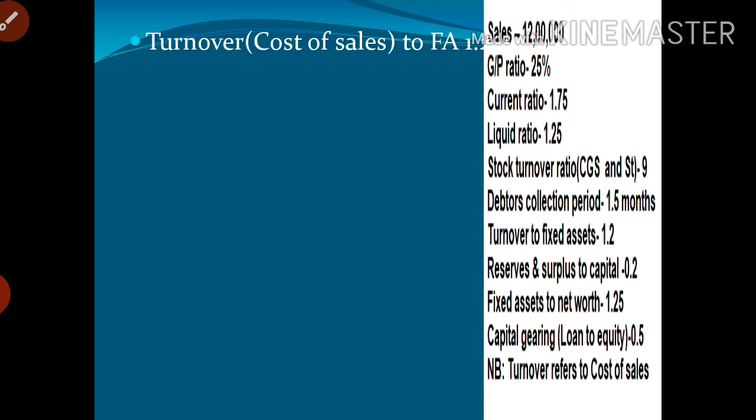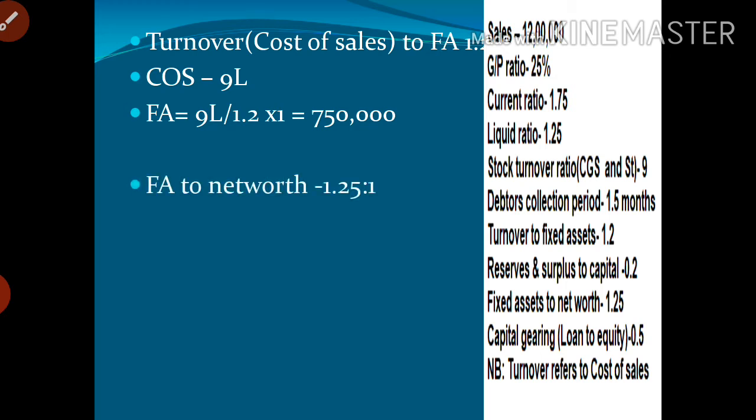Next we move to fixed assets. There is a turnover to fixed assets ratio given as 1.2, and the last note in the question states that turnover refers to cost of sales, which means cost of goods sold. So fixed assets equal cost of sales (9 lakhs) divided by 1.2, which gives 7 lakhs 50 thousand.